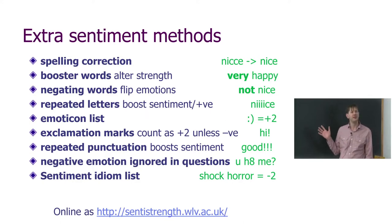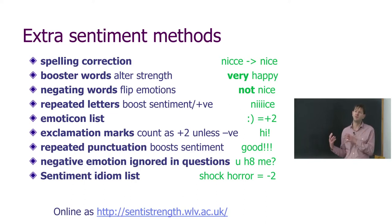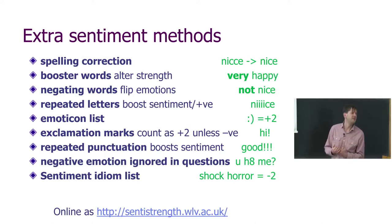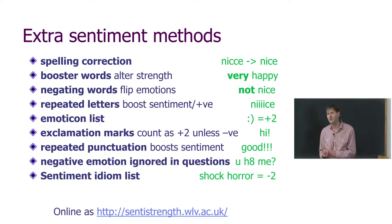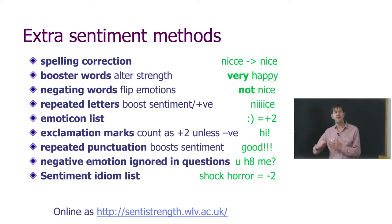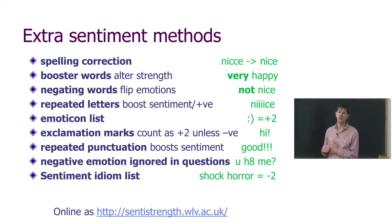These are some of the extra methods for SentiStrength, on top of the core method. The core method does most of the work, and these are extra rules for detecting or modifying sentiment in unusual circumstances — common enough that adding the rule improves performance. We have a spelling correction rule, because accidental and deliberate misspellings are common on the web. We also have a booster word rule: a list of words that increase or decrease the sentiment of the following word. For example, 'very happy' is stronger than 'happy,' and 'quite happy' is weaker.